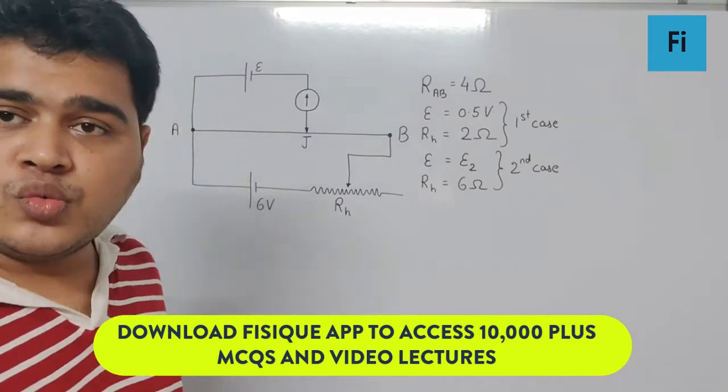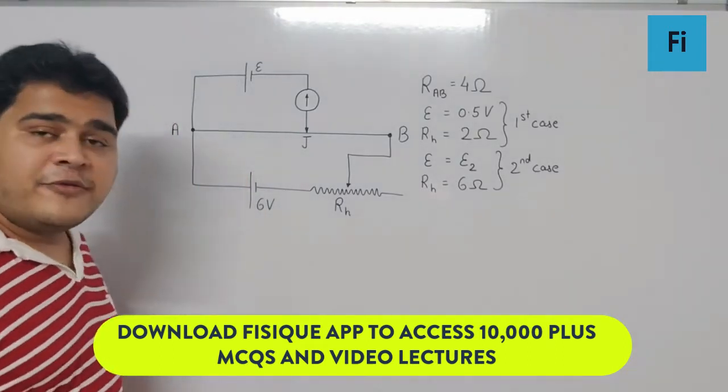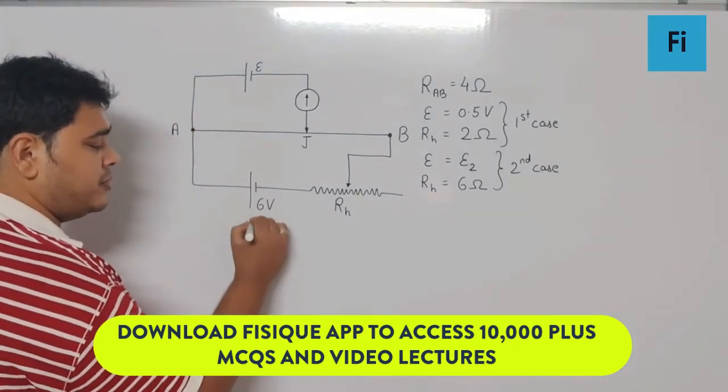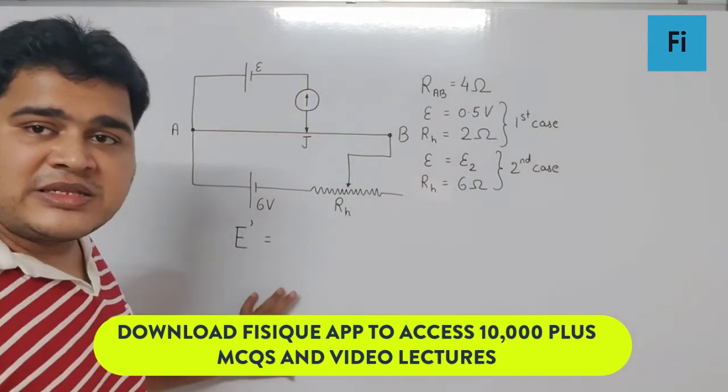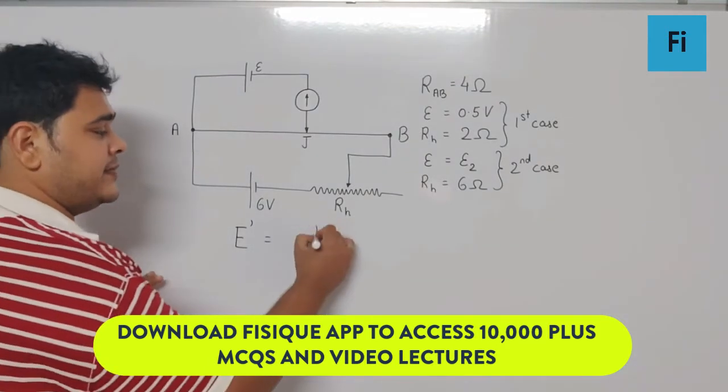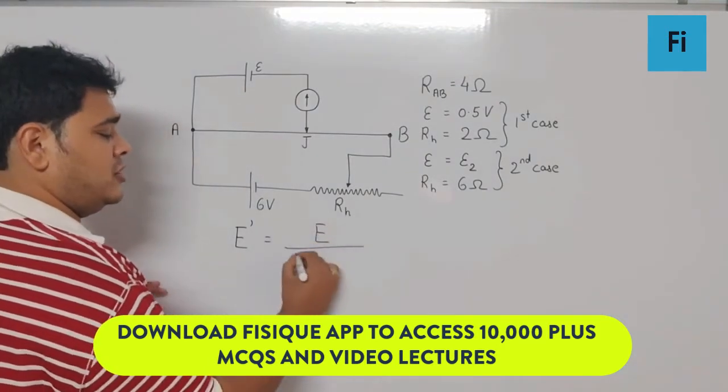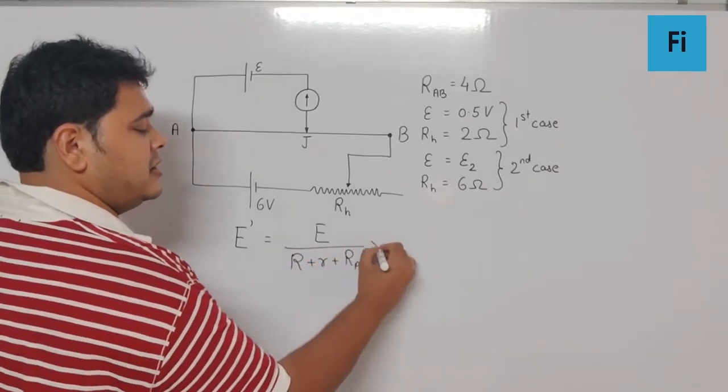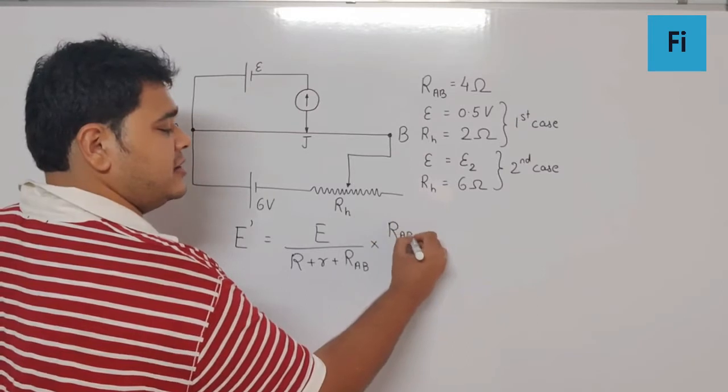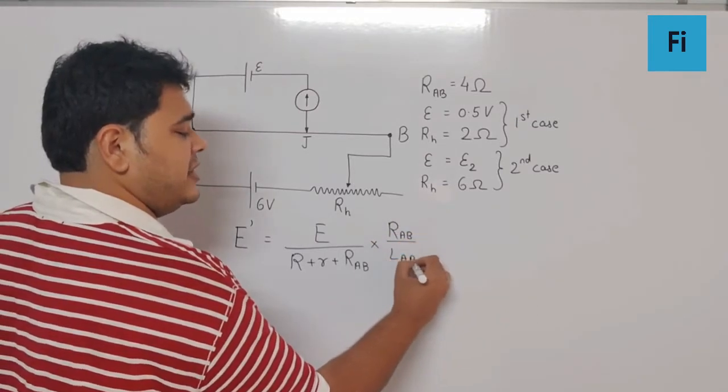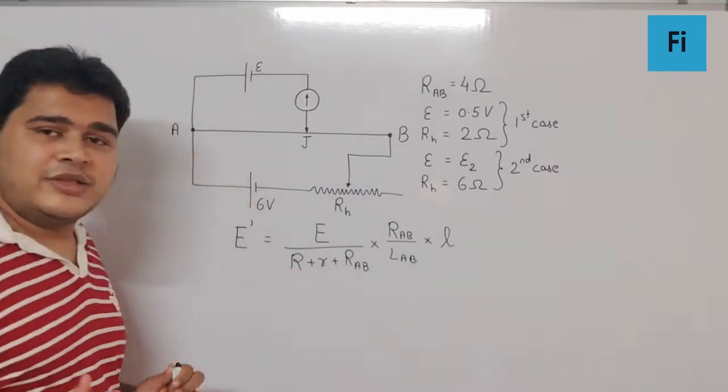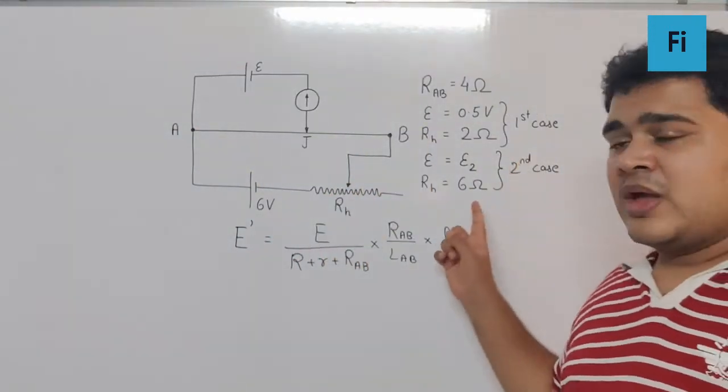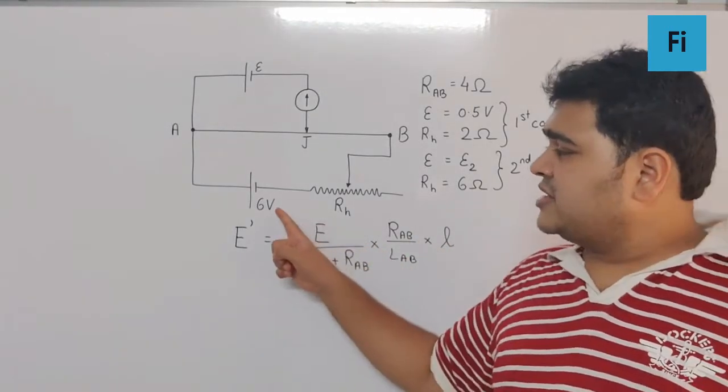For the cell whose EMF is to be measured, let's take that formula: E' = E/(R + r + R_AB) × (R_AB/L_AB) × balancing length. Now if you pay attention, for both cases the main cell remains the same.